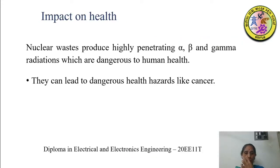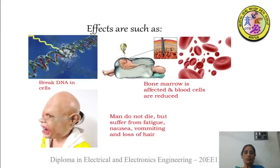What is the impact on health? Nuclear waste products produce highly penetrating alpha, beta, and gamma radiations, which are dangerous to human health. These can lead to health hazards like cancer. As shown in the pictures, the effect of radioactive materials includes the breaking of DNA in the cells, bone marrow is affected, blood cells are reduced, and the person may suffer from fatigue, nausea, vomiting, and other sensations.